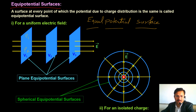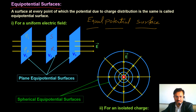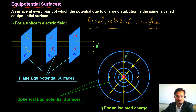If we consider points S and R on surface v2, that is again an equipotential surface — potential at point S will be equal to potential at point R. Similarly, for the next surface, points N and M again have the same potential. So that is considered as an equipotential surface.